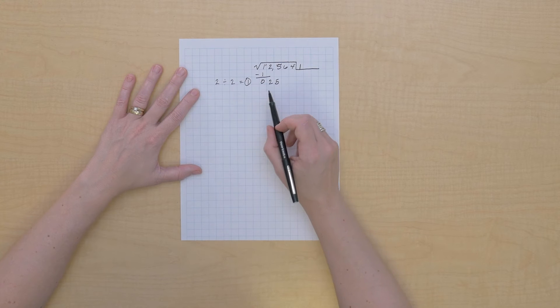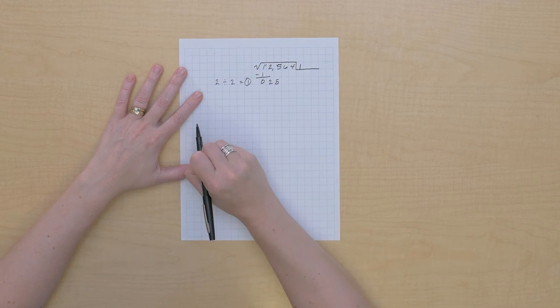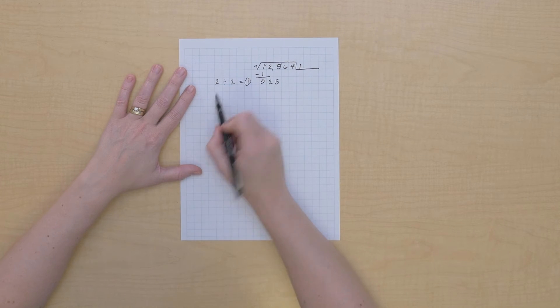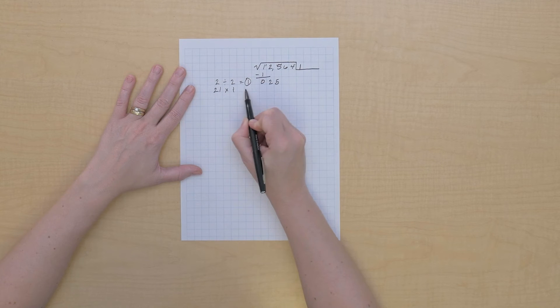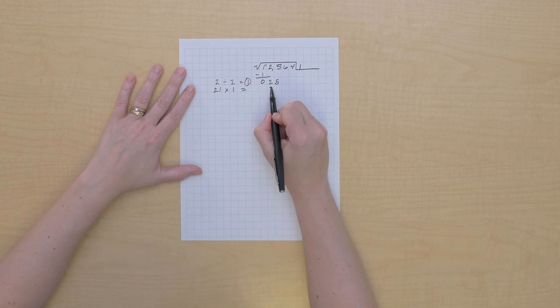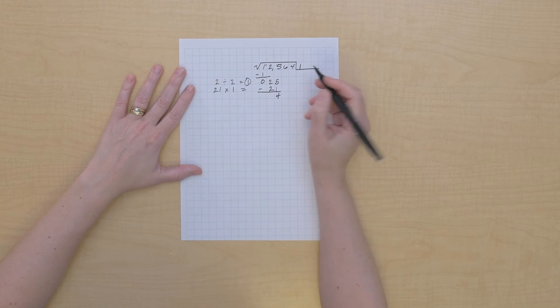And when we do that, we can see that we build out 21 times one, so that equals 21. So we should have four left at this point.